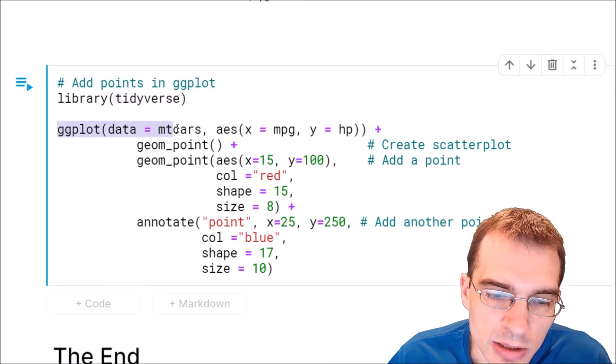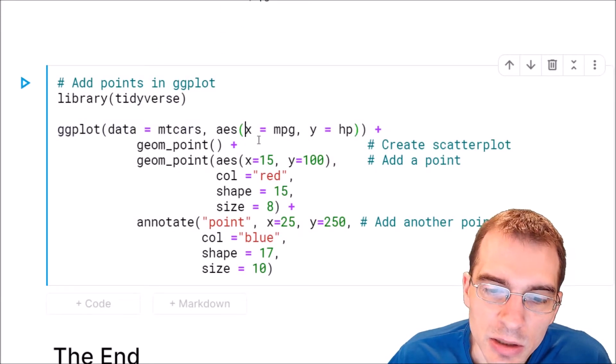We're going to call ggplot. The data is going to be mtcars again. We're going to plot the MPG on the X axis, HP on the Y axis, plus geom_point.